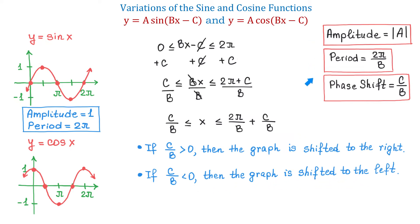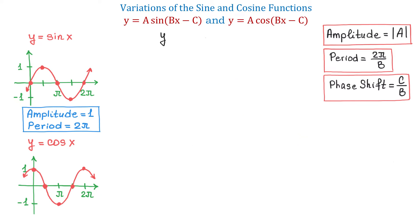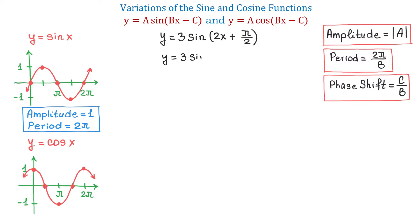Now with these three formulas in place, let's see an example. We will graph the function y equals 3 sine of 2x plus pi over 2. This function has the form y equals a sine of bx minus c, but here we have a plus in front of pi over 2. To match this form, we rewrite the function as y equals 3 sine of 2x minus negative pi over 2. These two negatives make a positive. So in the next step, we identify: a is 3, b is 2, and c is negative pi over 2.